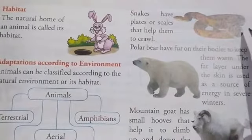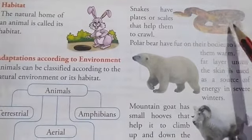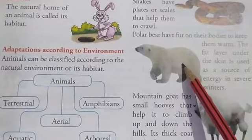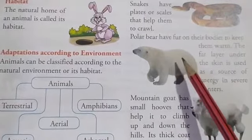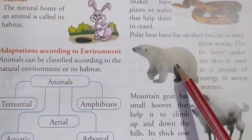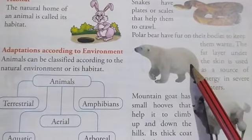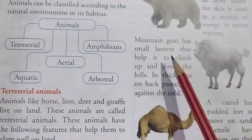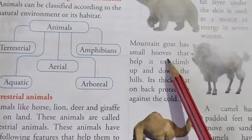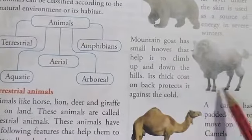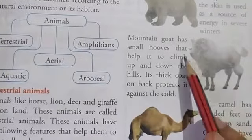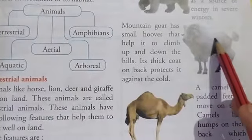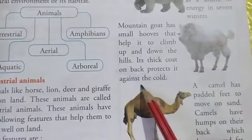For example, snakes have plates or scales on their body that help them to crawl. Similarly, polar bears have fur on their bodies which keeps them warm, because under this fur there is a fat layer which acts as a source of energy in winters. Also, the mountain goat has small hooves — hooves are the horny foot — that help it to climb up and down the hills. And its thick coat on its back protects it against the cold.